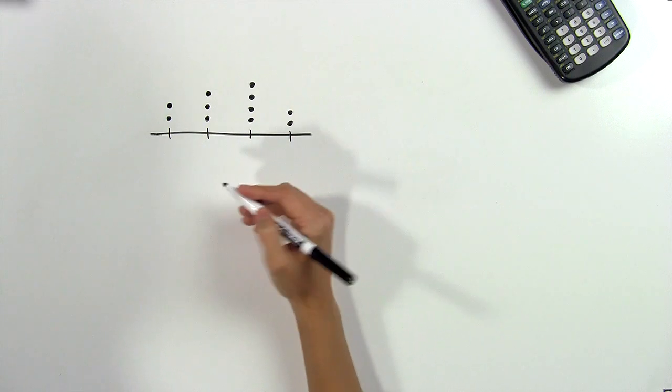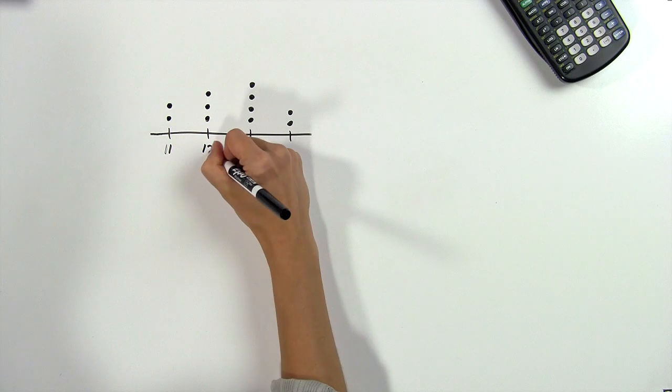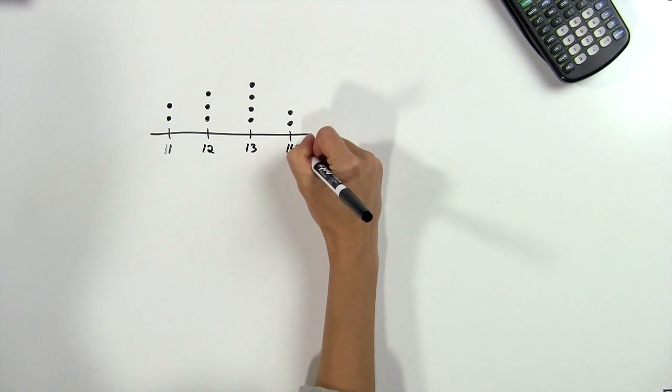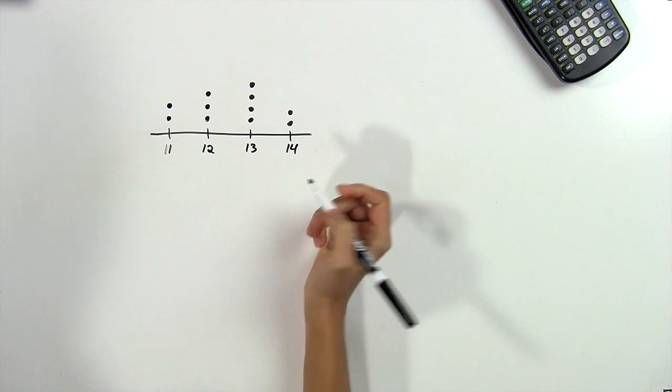For example, maybe this graph has 11, 12, 13, and 14, and these are the ages of the girls on a swim team.